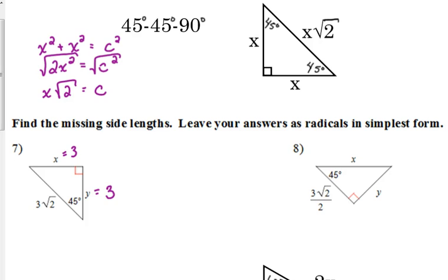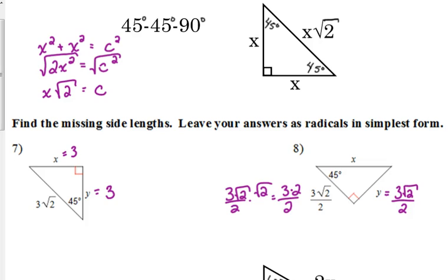In number 8, there's a square root of 2 in the given value, but that is one of the legs, not the hypotenuse. Our property says the leg times the square root of 2 gives the hypotenuse. The other leg is the same — 3 root 2 over 2. For the hypotenuse, we multiply by the square root of 2. The square root of 2 times the square root of 2 gives 2, and those 2s cancel, so our hypotenuse is 3.